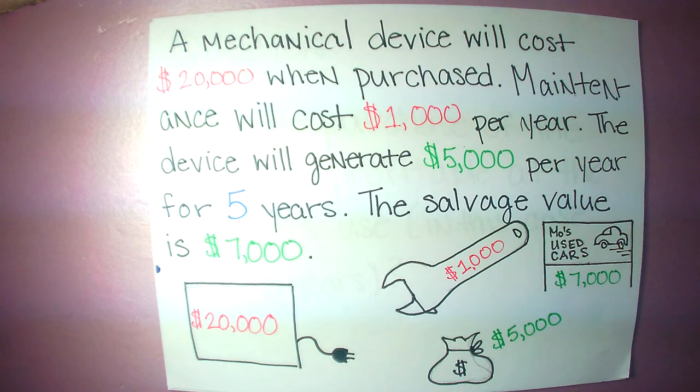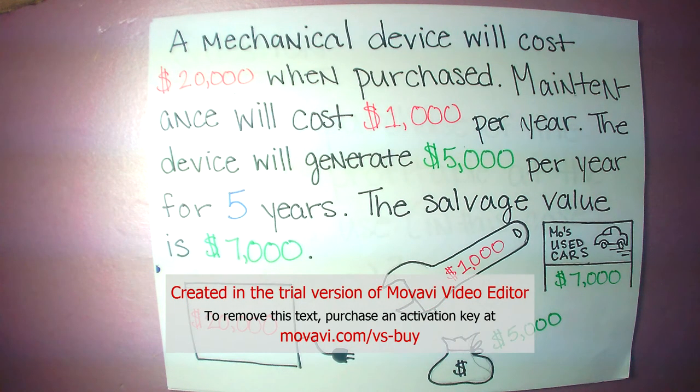For this example, we're looking at a mechanical device which will cost $20,000 when purchased. Maintenance will cost $1,000 per year, and the device will generate $5,000 per year for a total of five years.